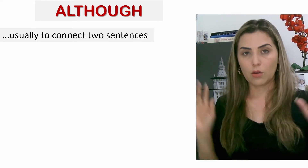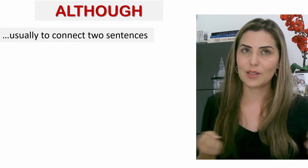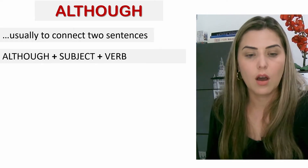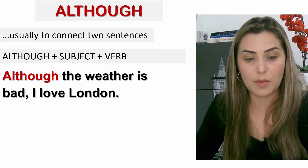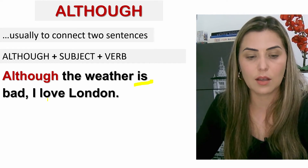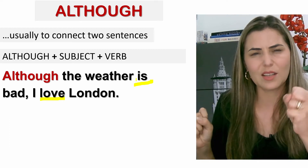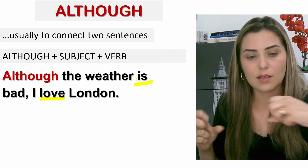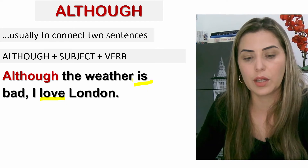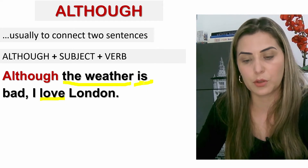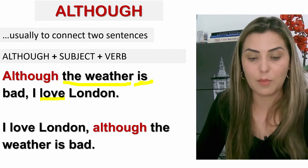O 'although' costuma conectar duas sentenças, e para existir duas sentenças tem que haver um verbo em cada uma delas. Exemplo: 'Although the weather is bad, I love London.' Você tem 'is' — um verbo — e 'love' — outro verbo. São duas cláusulas com dois verbos.